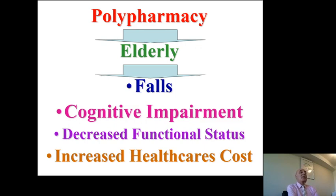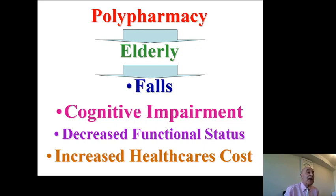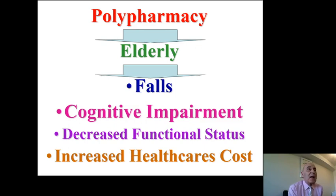Polypharmacy in the elderly can be associated with many problems including falls — especially when seniors are taking CNS-affecting drugs — cognitive impairment, decreased functional status, and increased healthcare costs, possibly billions of dollars lost every year. Pharmacists can contribute to addressing this problem, but they need a response from prescribers, patients, and health authorities.